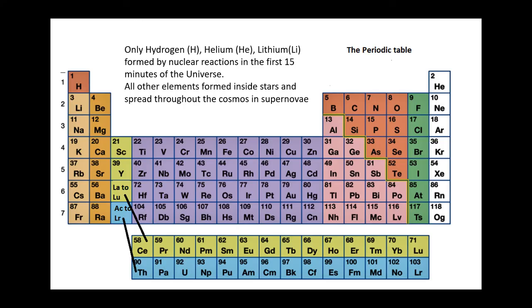If we look at all the elements found in nature, it was only hydrogen, helium, and lithium which were formed in the first 15 minutes by the nucleosynthesis we've talked about earlier. All the other elements such as carbon, nitrogen, oxygen, iron were formed inside stars and were spread throughout the cosmos in supernovae.